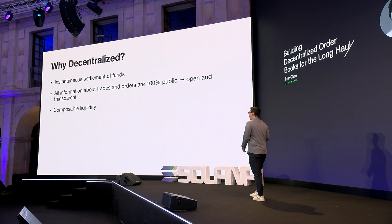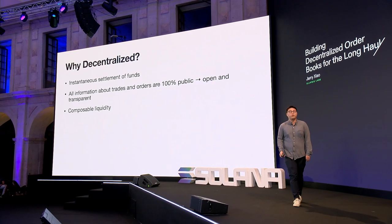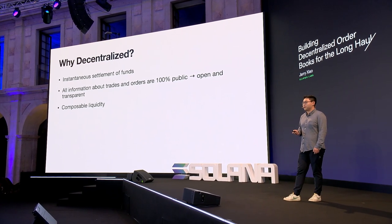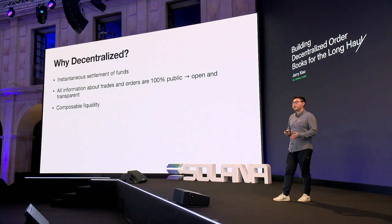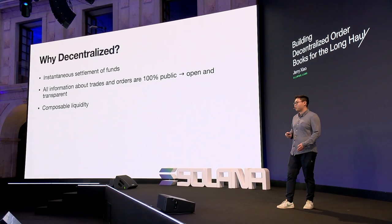Why should order books be decentralized? Blockchains allow for instantaneous settlement of funds, which is a huge innovation. If you've ever transferred a token on Solana, the process takes maybe a couple seconds to confirm and under half a minute to finalize — very different from an ACH transfer or a wire transfer in traditional finance, which can take on the order of days to settle. Additionally, all information about trades and orders is 100% public. This has trade-offs, but it does lead to a more open and transparent financial system, which many people have criticized the traditional financial world for lacking.